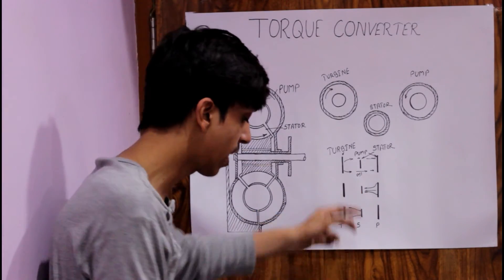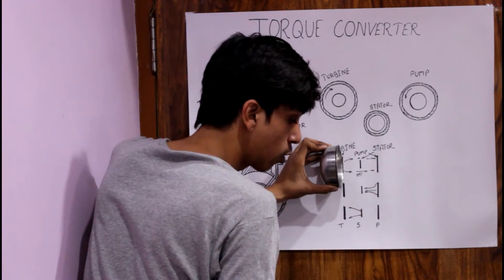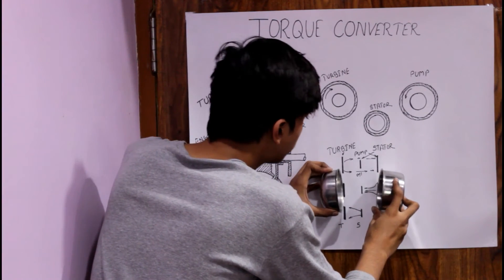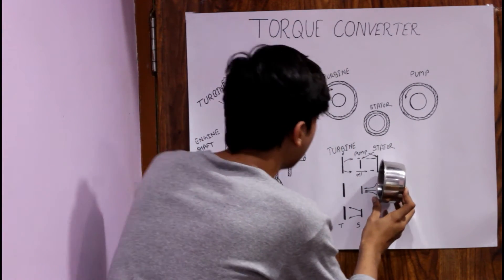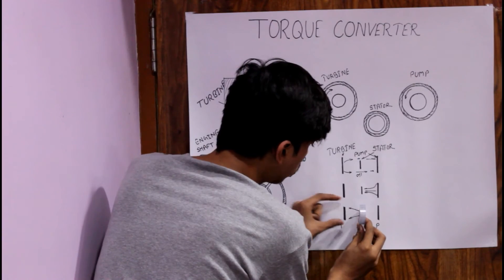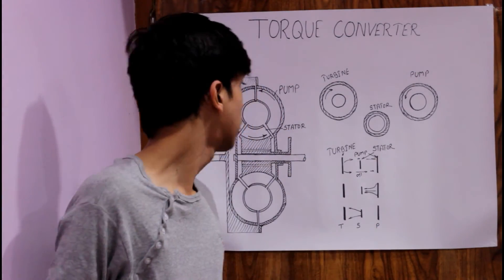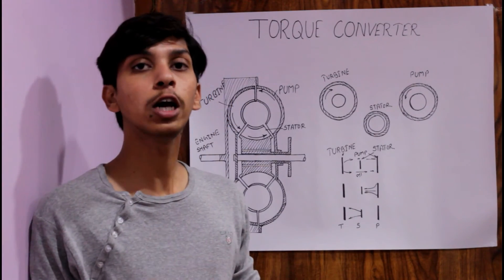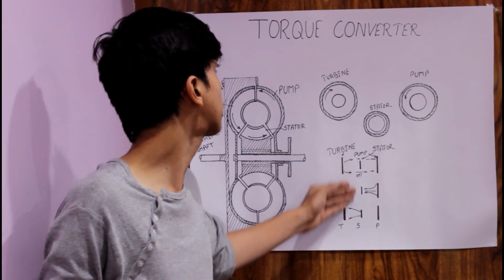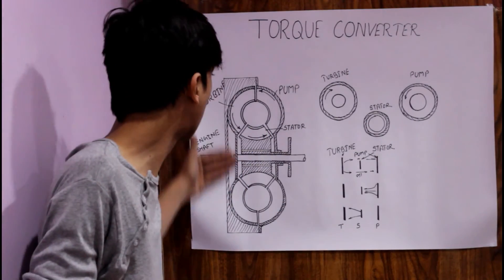The oil goes to the pump, then comes out from the center and directly strikes the stator. In the second position, oil comes out from the pump and strikes the stator, and because of the stator the oil goes to the turbine at almost 90 degrees. Similarly, the pump also reverses the oil flow at 180 degrees back to the turbine. Because of this stator, torque conversion is possible.